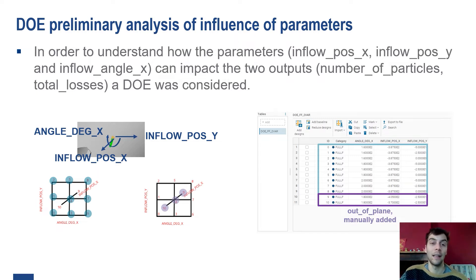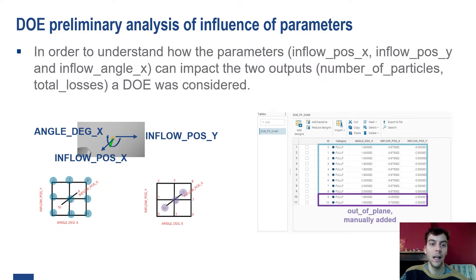With ModFrontier, we used a design of experiment to schedule nine design evaluations using a two-factor full factorial setup. We kept constant the position X and varied, within a specific range, both the position Y and the angle X. In this way, we took the extremes of the allowed range for these two inputs and evaluated the outputs at those extremes. We also added two out-of-plane inflow position X points to understand how this third input parameter can influence lubrication and losses.